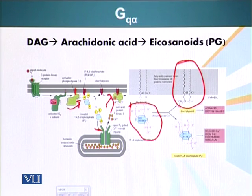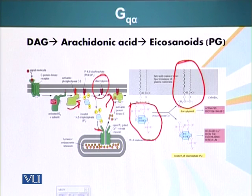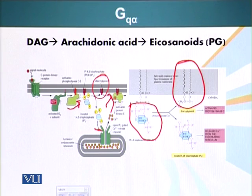Protein kinase C, as the name suggests, is a kinase — it phosphorylates other proteins. Additionally, diacylglycerol can be used for production of arachidonic acid, which is ultimately converted into molecules that cause inflammation and are produced in response to inflammation. One of the key enzymes in this pathway is cyclooxygenase.